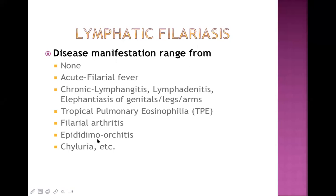Other manifestations include epididymo-orchitis, which is inflammation of the epididymis and testes in males, and chyluria - the passage of chyle in the urine. Chyle is abdominal lymph: when fat or lipids are being absorbed from the intestine, the lymph present inside the abdominal lymphatic channel is called chyle, and it is milky white in nature.